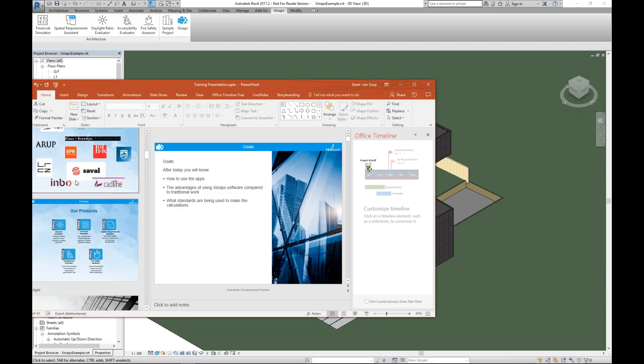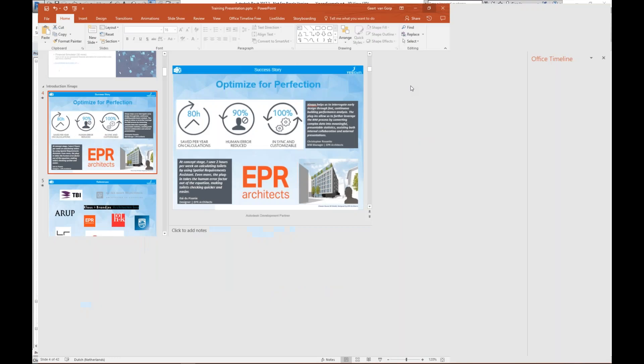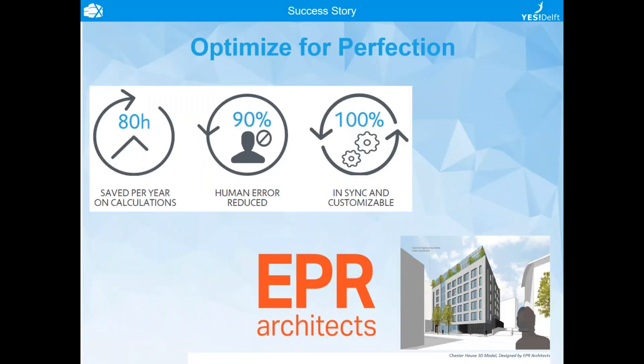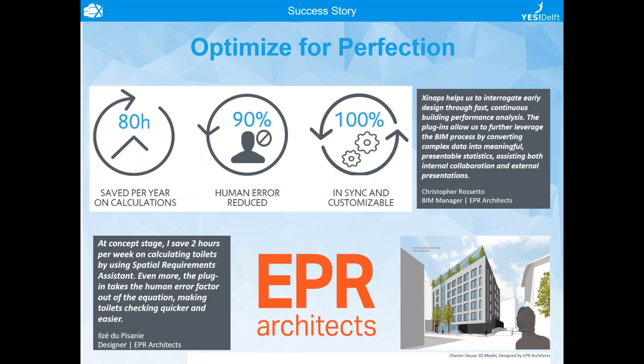I want to show you one slide before we begin. We're here to optimize for your design perfection. This is a business case from EPR architects based in London. At concept stage, 'I save two hours per week on calculating toilets by using the Space Requirements Assistant. Even more, the plugin takes the human error factor out of the equation, making toilet checking quicker and easier.' — signed by Ilse Dupizeni, lead designer. Together with her, we created just one feature: the toilet checking, part of the design suite we're going to show you.